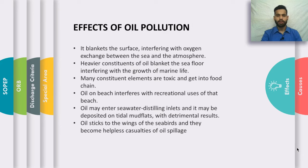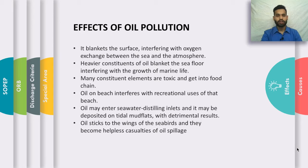Oil pollution blankets the surface, interfering with oxygen exchange between the sea and the atmosphere. Heavier constituents of oil blanket the seafloor, interfering with the growth of marine life. When oil is discharged into the sea it creates a sheen on the surface which blocks oxygen and other important elements from reaching marine organisms. Many constituent elements are toxic and get into the food chain — smaller fish are eaten by larger fish or even by humans, so the whole food chain gets affected.